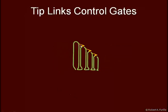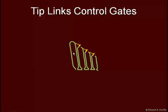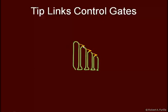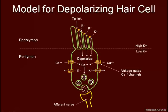Here are the tip links and the gate. As these hair-like structures projecting from hair cells move toward the longer projection, it stretches the tip links, pulling the gate open. As projections move in the opposite direction, that relaxes the tip links and the gates close. When the gates are open, potassium can move into and depolarize the membrane. This is endolymph; this is perilymph. There is high potassium concentration in the endolymph and low potassium concentration in the perilymph, so potassium moves in and depolarizes the membrane.